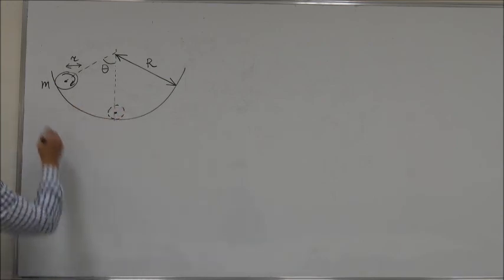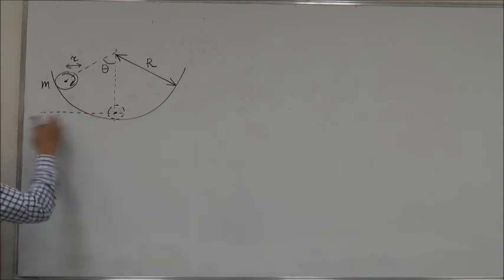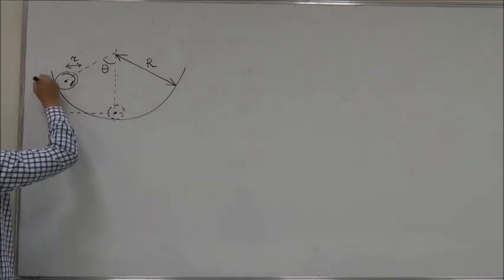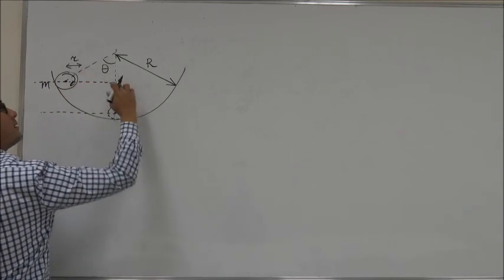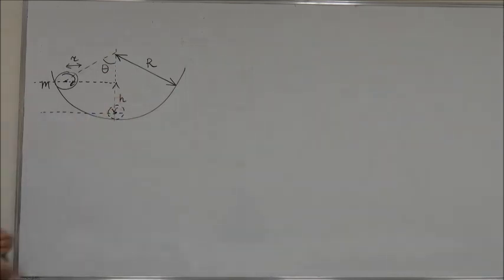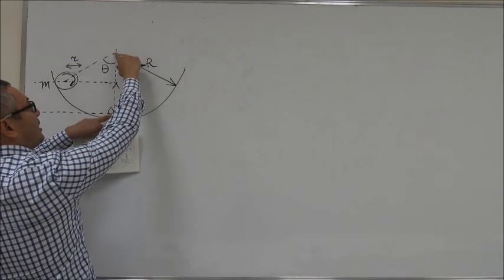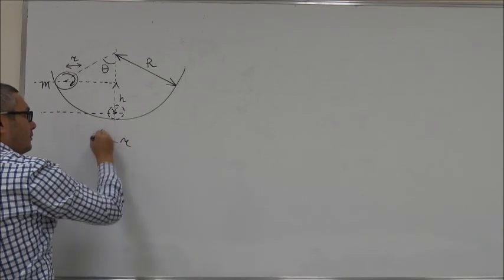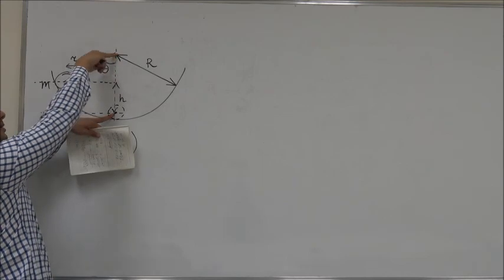If we say that this level here is a zero level for the potential energy, then the original potential energy is determined by this height h. So, let's calculate this height h. This distance here is equal to big R minus small r.